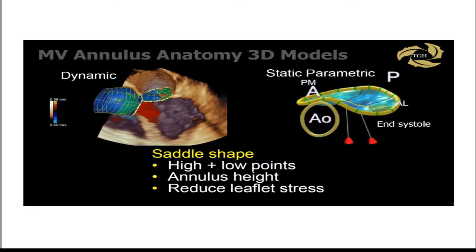Models have helped us understand mitral annular movements and how the mitral valve actually works — originally studied by microsonometry with crystals on pig hearts, but now visible with 3D echo. Dynamic models from the Siemens product, and static and parametric models from the Phillips product, show indisputably that the mitral valve is saddle-shaped, has high and low points, has a concept of annular height, and is specifically designed to reduce leaflet stress.